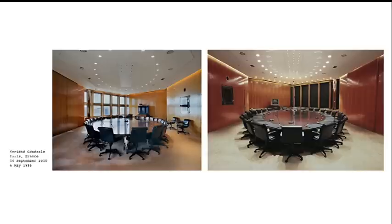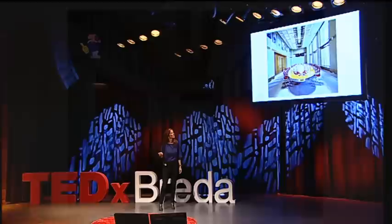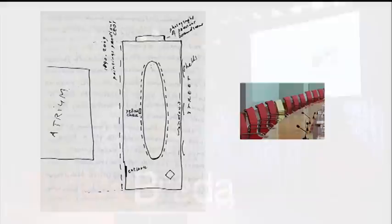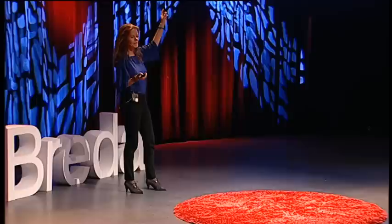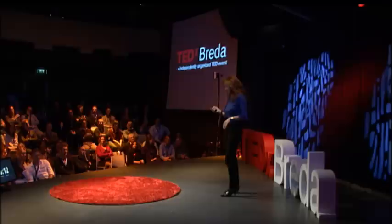This is Société Générale, also a very large bank in France — left and right, both exactly the same room, not changed. This is the Royal Dutch Shell Group in The Hague. Here you see the detail of the yellow chair. When the former CEO, Jeroen van der Veer, took office, his secretary always put the papers on the wrong place. And then Mr. van der Veer said, why don't we take a yellow chair? Then you know exactly where to put it, and it really fits well with the yellow and red colors of the Shell Group.